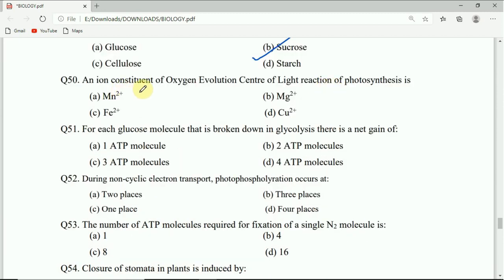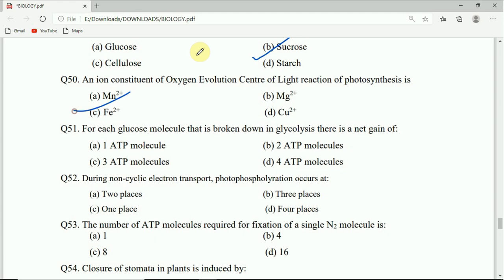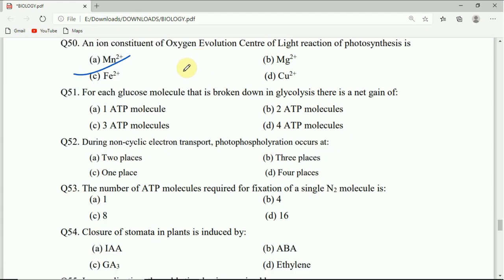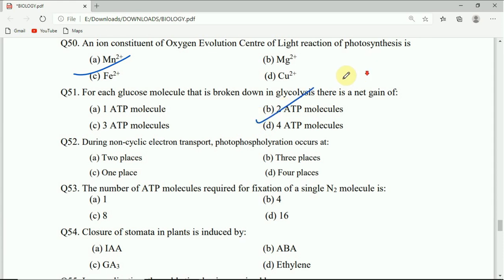Question 50: An ion constituent of oxygen evolution center of light reaction of photosynthesis is Mn2+, Mg2+, Fe2+, or Cu2+. Correct answer will be A. Question 51: For each glucose molecule that is broken down in glycolysis, there is a net gain of 1 ATP molecule, 2 ATP molecules, 3 ATP molecules, or 4 ATP molecules. Correct answer will be B, that is 2 ATP molecules.